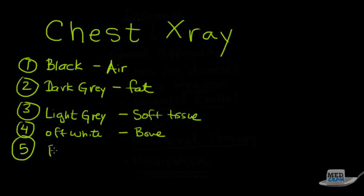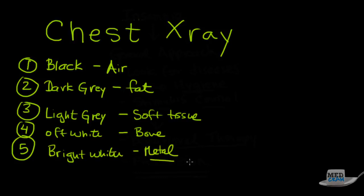And then finally, you're going to see bright white. These are things like metal, which is sometimes seen on chest x-rays, either because of pacemakers, defibrillators, or even buckshot from gunshot wounds. So these are your five things that you're generally going to see.